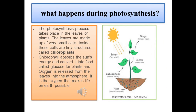Now, what happens during photosynthesis? The photosynthesis process takes place in the leaves of plants. The leaves are made up of very small cells. Inside these cells are tiny structures called chloroplasts. Chlorophyll absorbs the sun's energy and converts it into food called glucose for plants, and oxygen is released from the leaves into the atmosphere. It is this oxygen that makes life on earth possible.